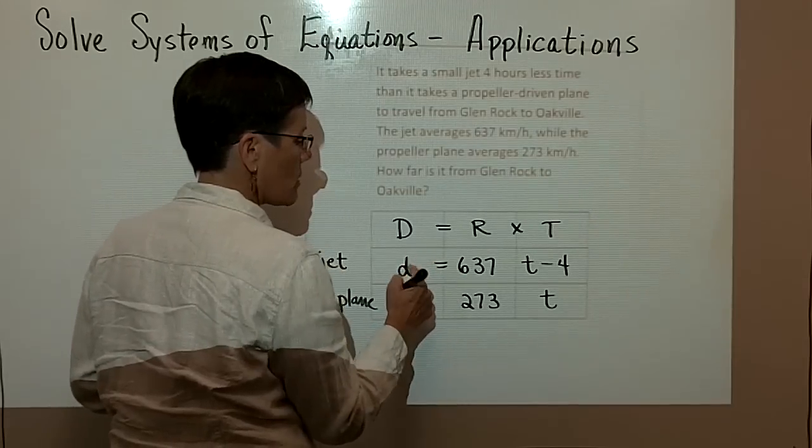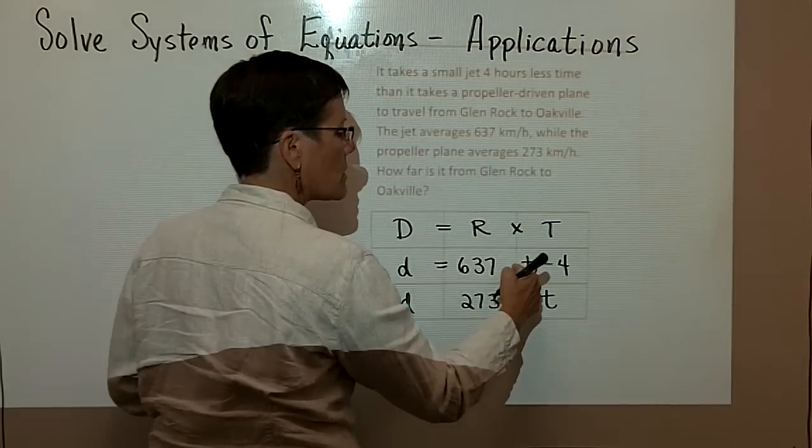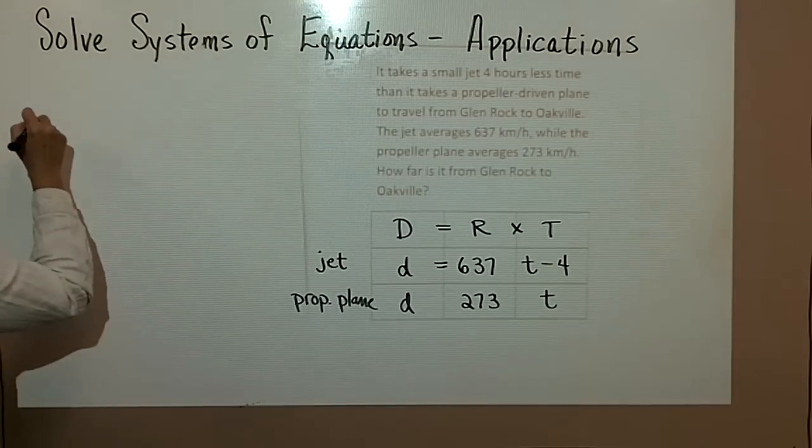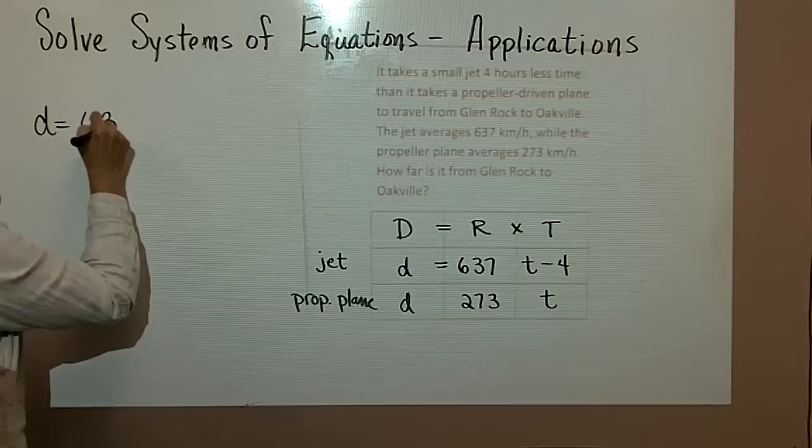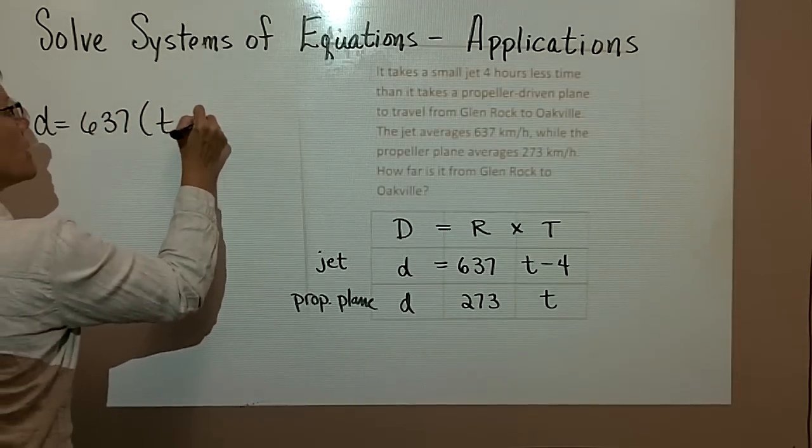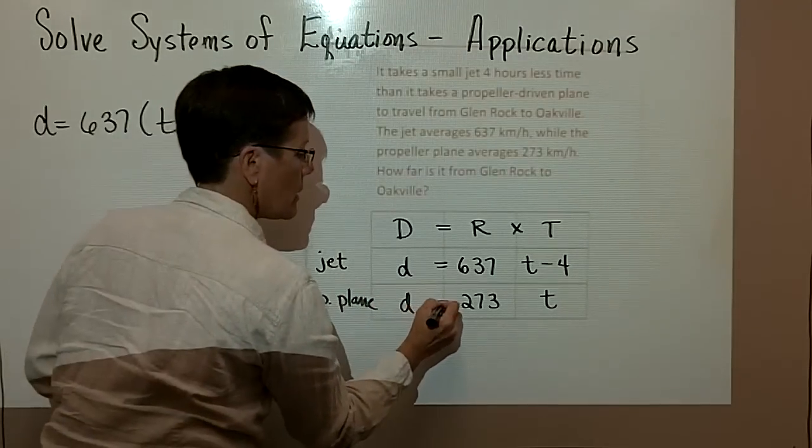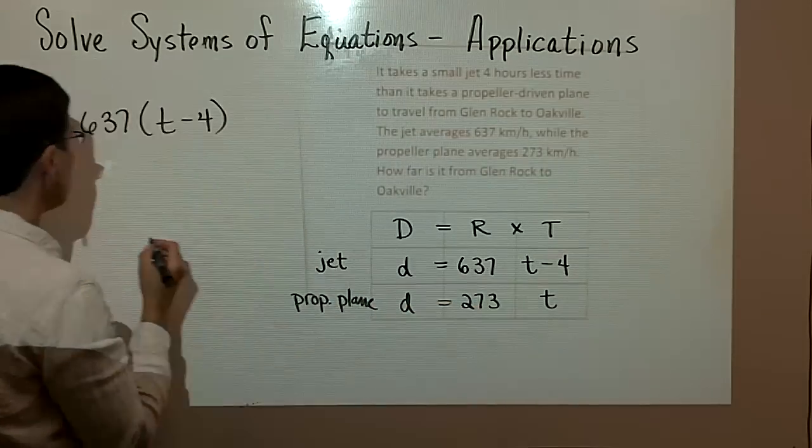Now I'm going to write my two equations. The first one is D equals 637 times T minus four. And right here, D equals 273 times T.